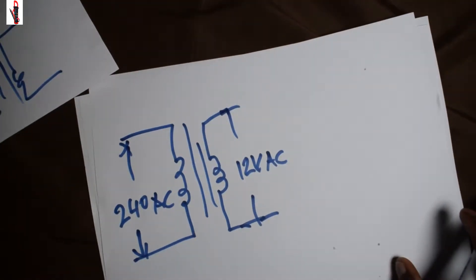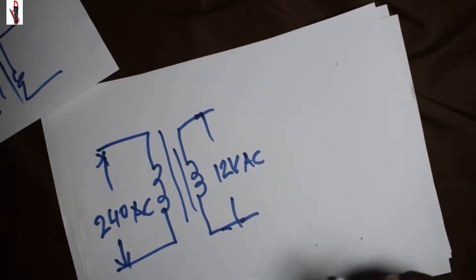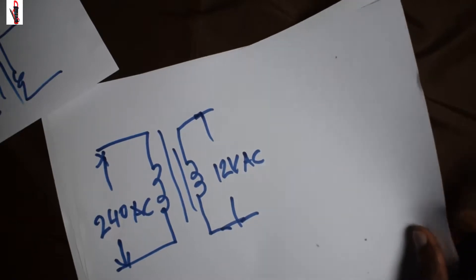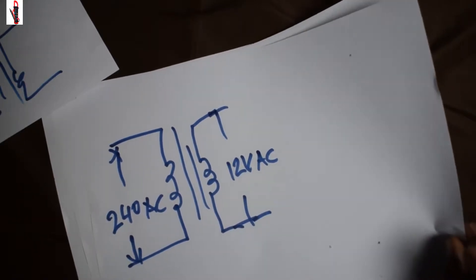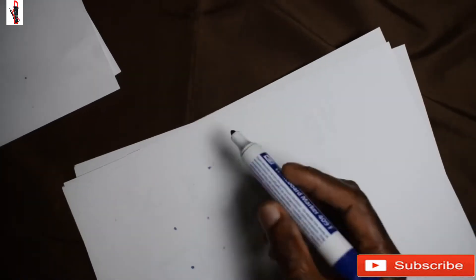As we all know, with our transformers we are able to get a smaller quantity of voltage. But we need to supply our circuit, so we really need to employ something we all know as diodes. A diode looks something like this.